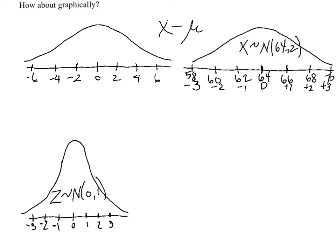So subtracting every observation by the mean of 64, we end up with this distribution looking identical except that it's moved over, so we've shifted it over 64 units, in this case inches.